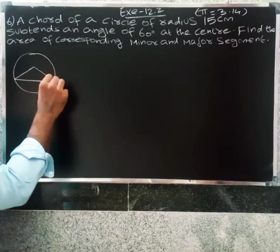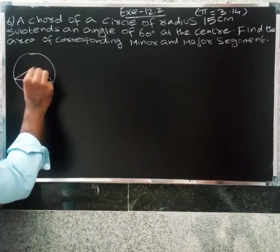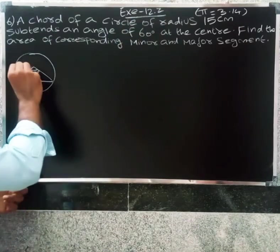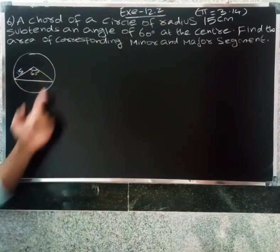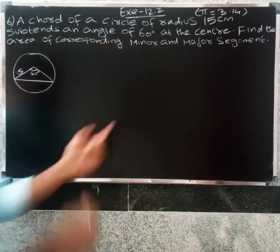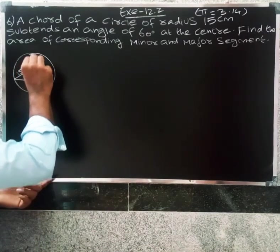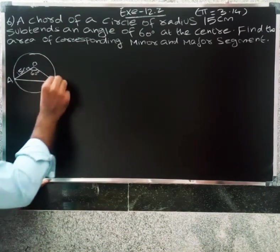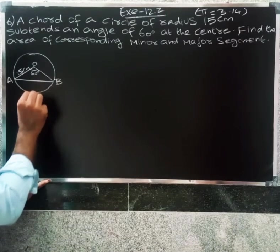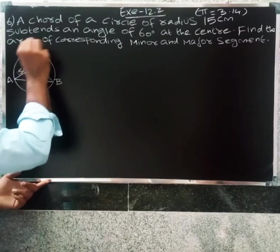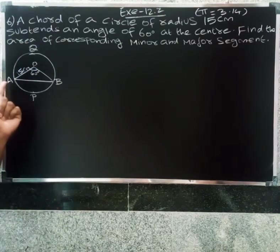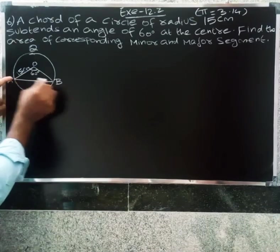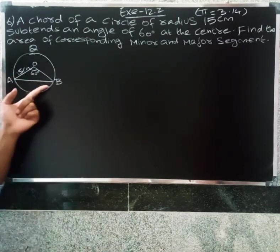So the angle of 60 degrees, radius 15 centimeters. Find the corresponding minor and major segment. First the minor segment and a chart, that segment. Minor segment doesn't that A-P-B.